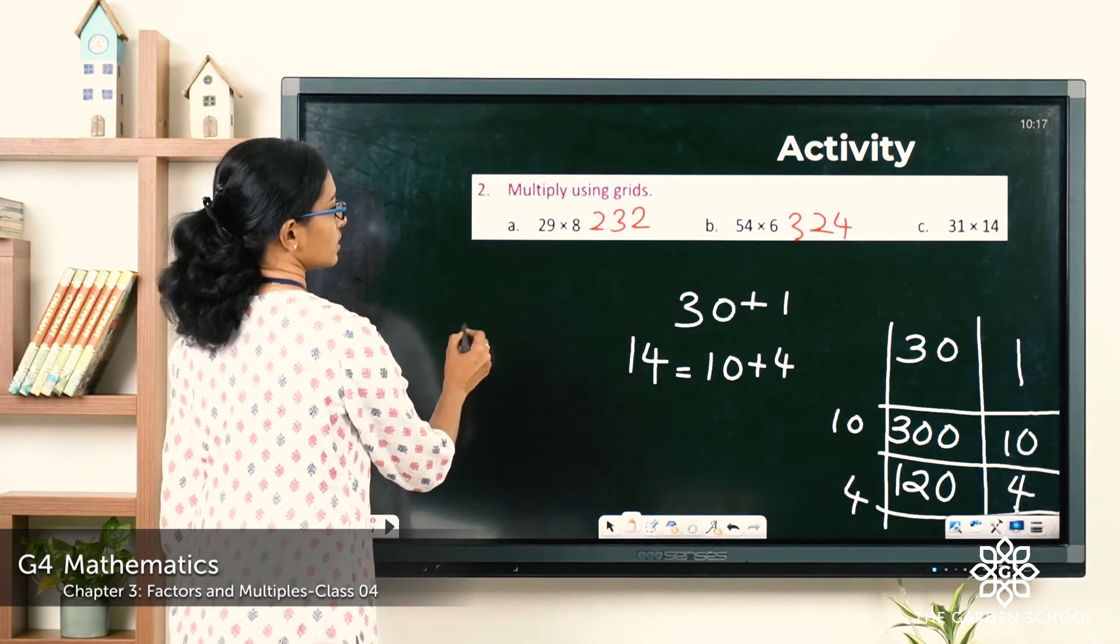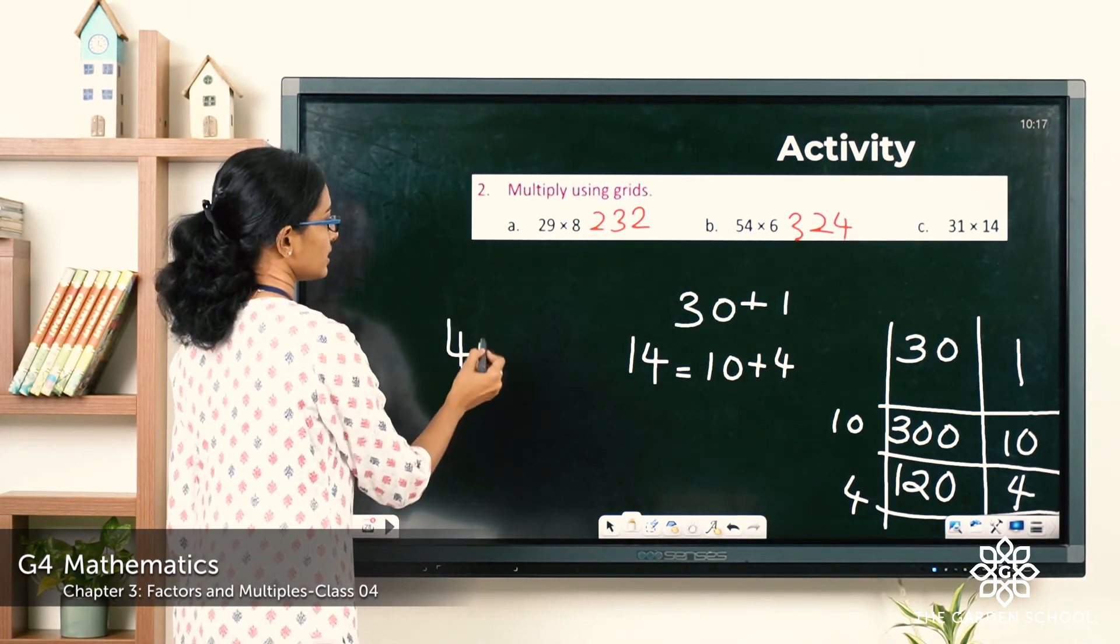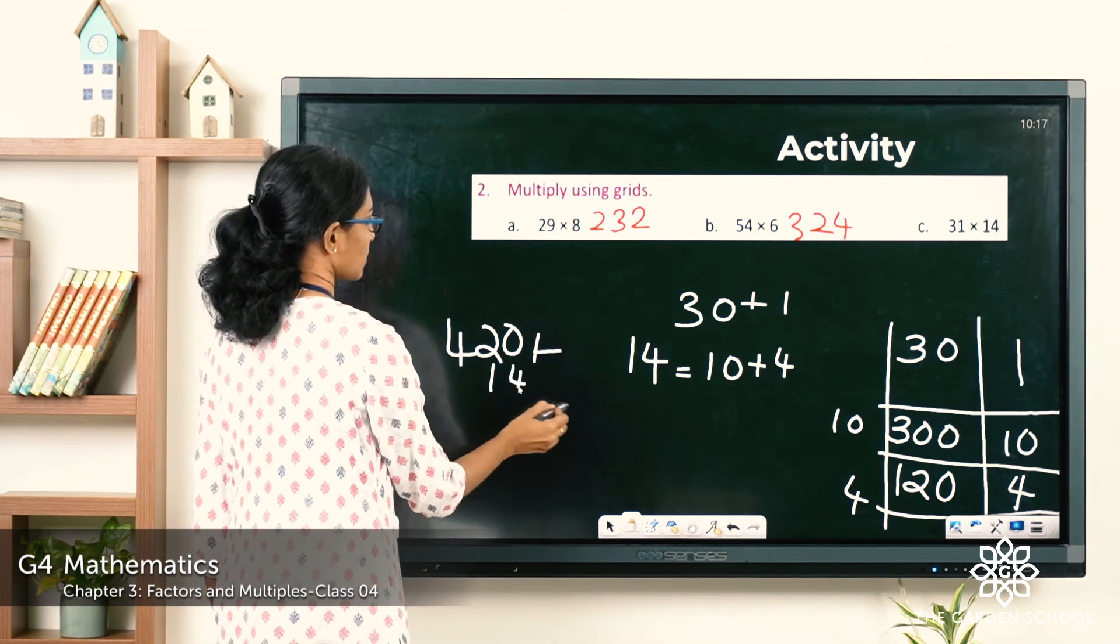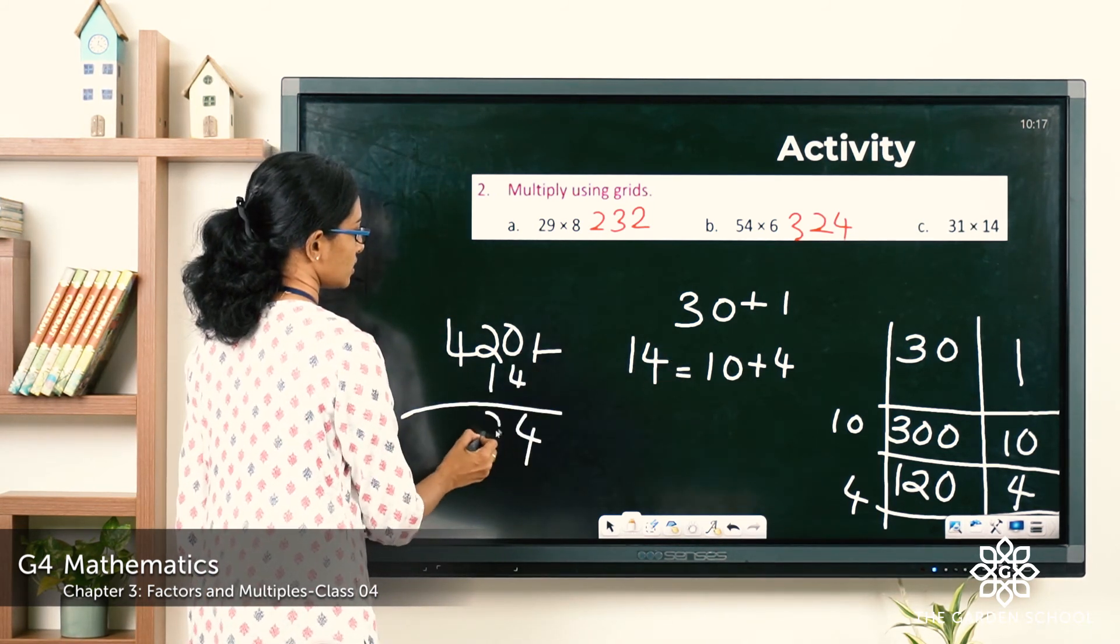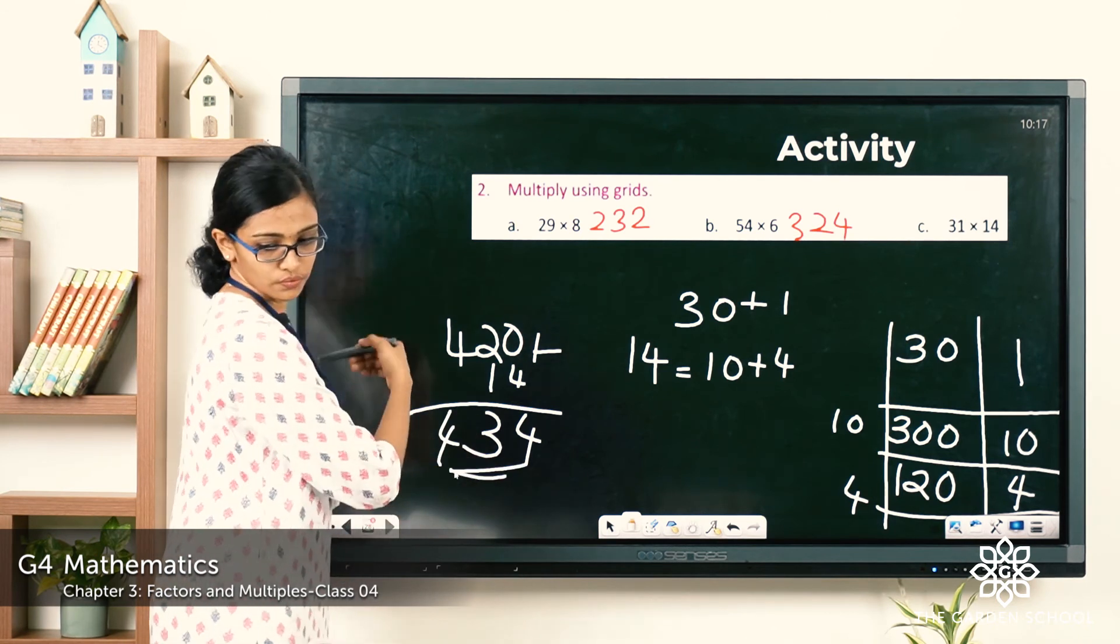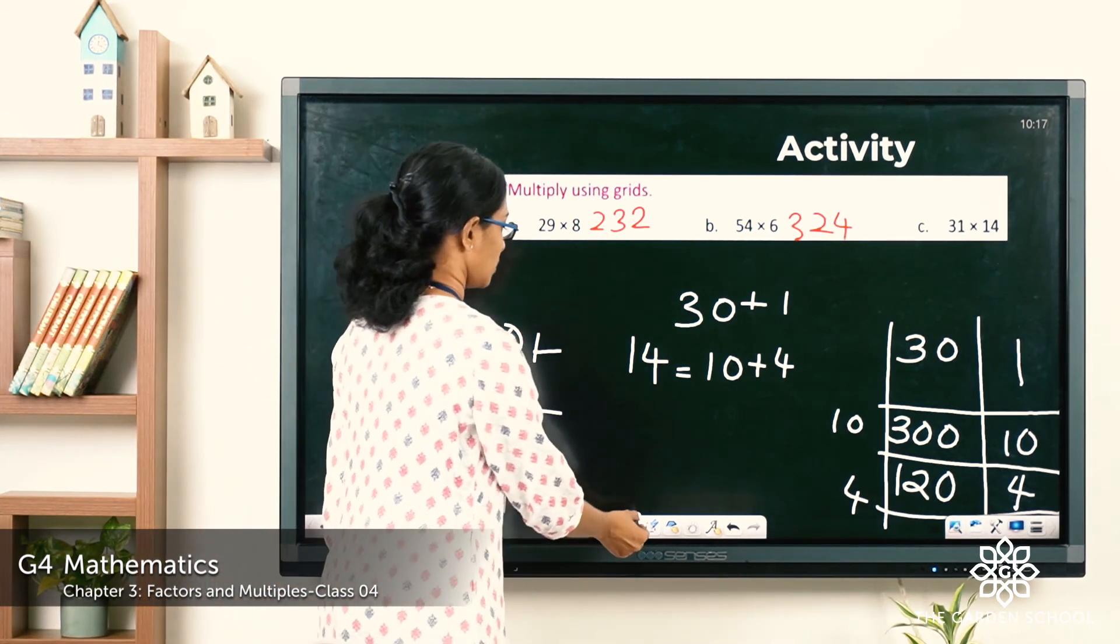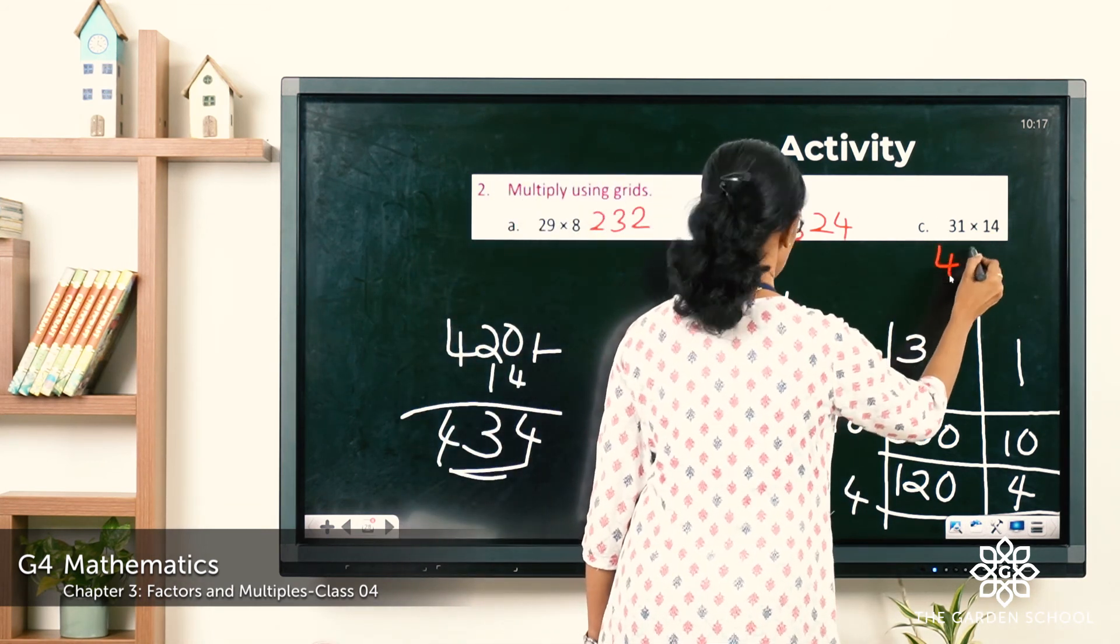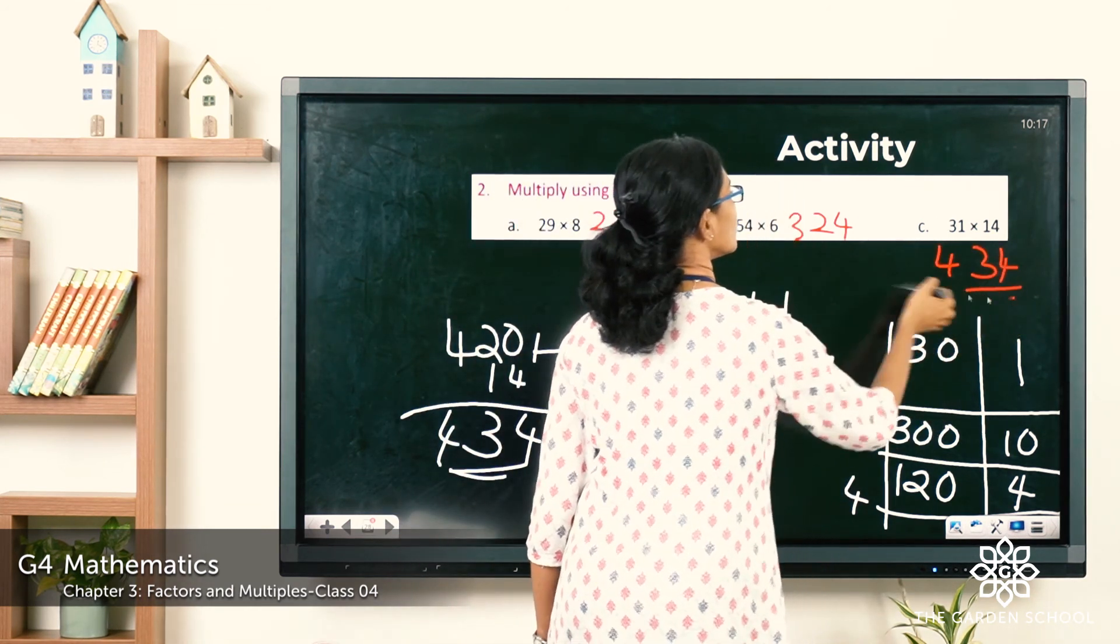So here 300 plus 120 is 420, plus 10 plus 4 is 14. So here the answer is 434. I hope your answer to question C was also correct.